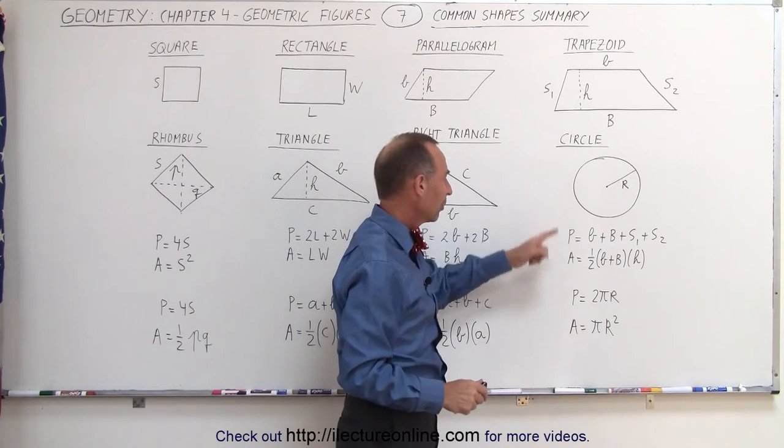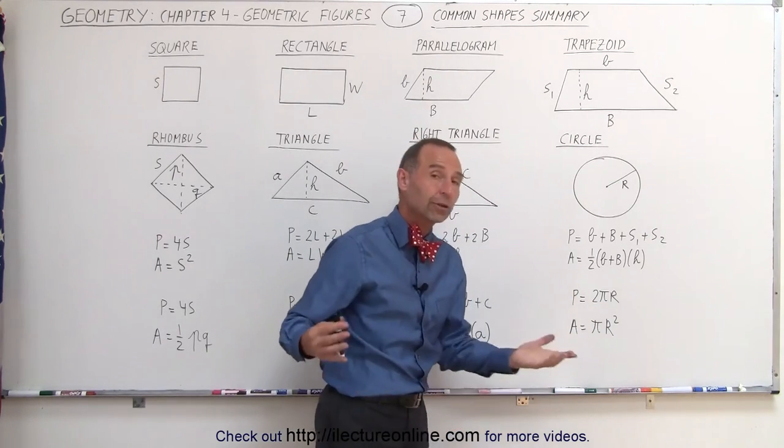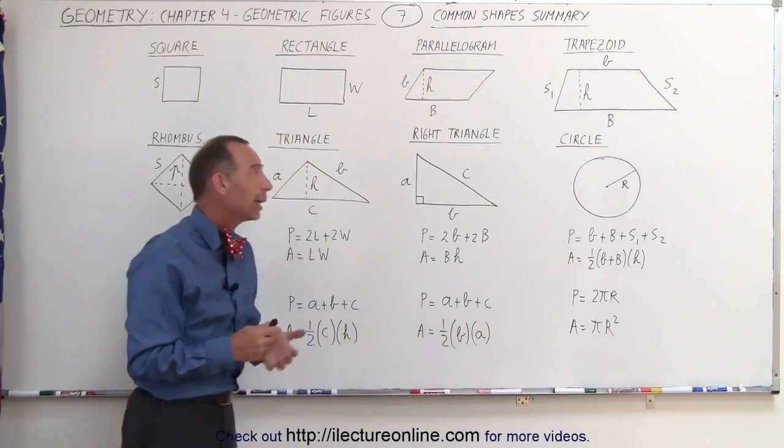And finally, the circle. The perimeter is two pi r, and the area is pi r squared. For a circle, again, all you need to know is simply the radius.